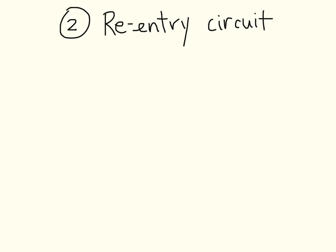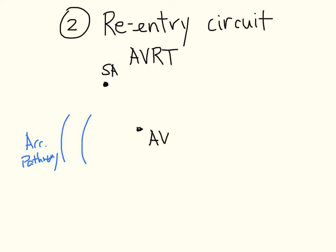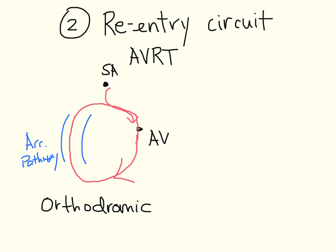The second scenario is re-entry circuits, specifically AVRT — atrial ventricular re-entry tachycardia. The accessory pathway forms a loop allowing circular movement of impulses. The much more common form involves impulses coming down from the SA node, through the AV node, going up the accessory pathway, and then back through the AV node again, forming a circuit. This is called orthodromic conduction.